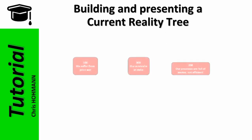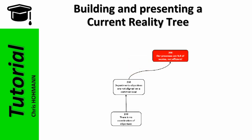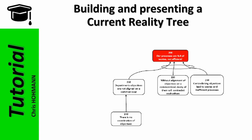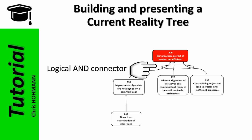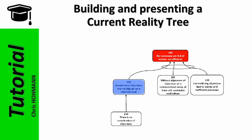Starting with number 200, I ask: why are our processes full of waste and not efficient? The answer is: departments' objectives are not aligned on a common goal. Why? Because there is no coordination of objectives by senior management. Without alignment of objectives on a common goal, many will contradict each other, and contradicting objectives lead to waste and inefficient processes. Combining entities 210, 220, and 230 through an AND connector, we can read the full logic leading to UD 200.